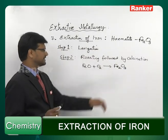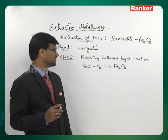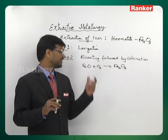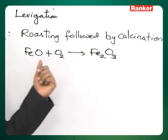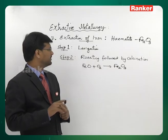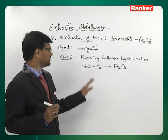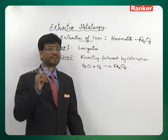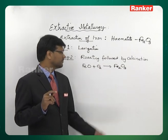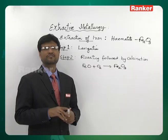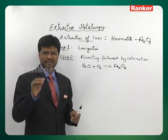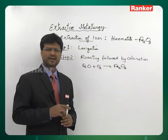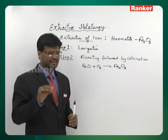The most important transformation during roasting is the conversion of ferrous oxide to ferric oxide. Ferrous oxide is more basic than ferric oxide, so it could react with SiO2 to form ferrous silicate (FeSiO3), causing a loss of Fe. By converting it to ferric oxide, we avoid this loss, since ferric oxide will not form ferric silicate.